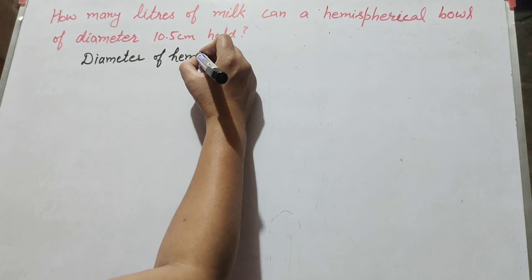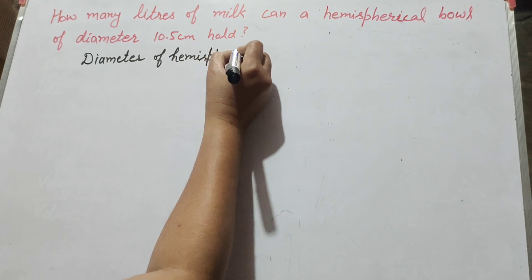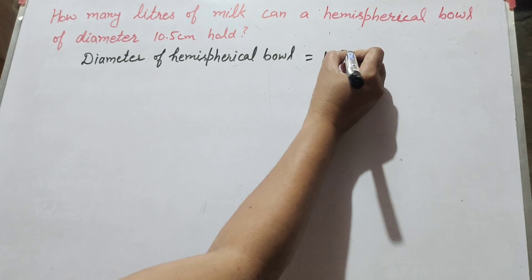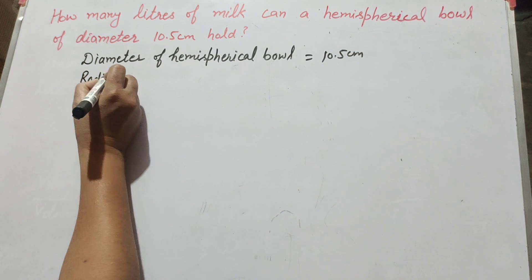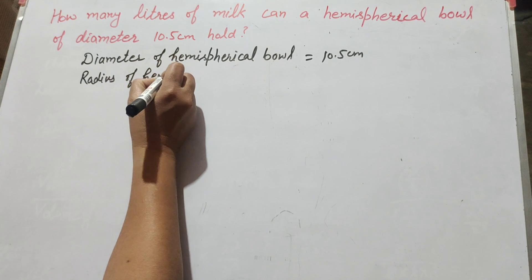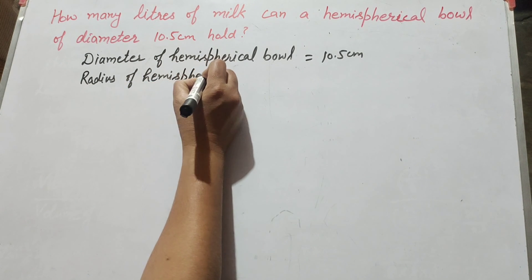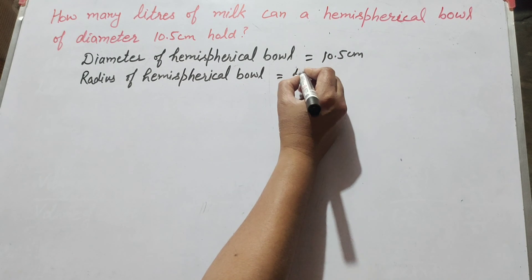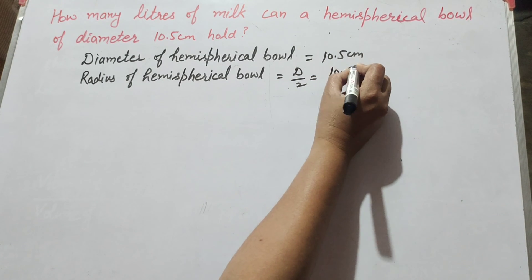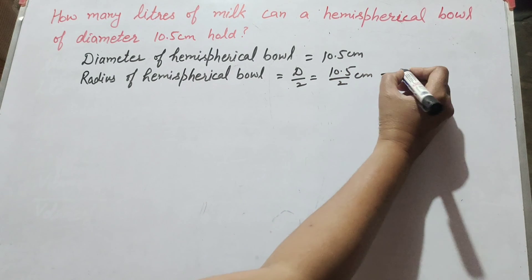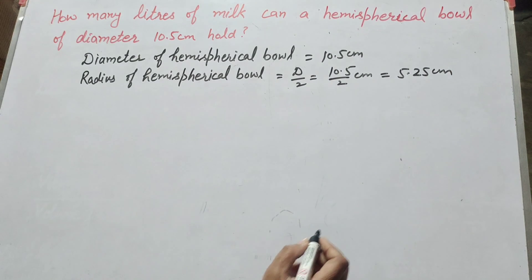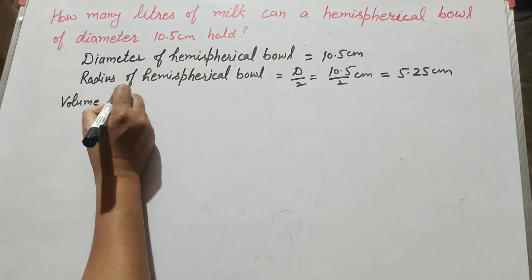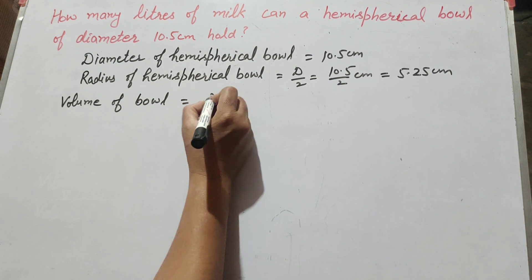Given: the diameter of the hemispherical bowl is equal to 10.5 centimeters. We find the radius of the hemispherical bowl. Radius equals diameter divided by 2, so 10.5 divided by 2, which equals 5.25 centimeters.